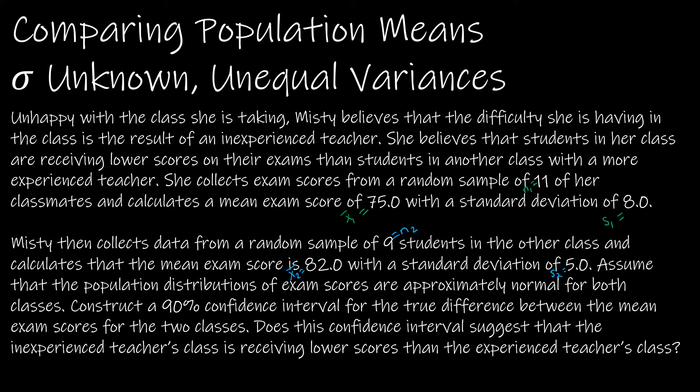She then collects a random sample of nine students from another class. So that's n2. And calculates that the mean exam score is 82, so X bar two is 82 with a standard deviation of 5. We are going to assume that the population distributions of exam scores are approximately normal for both. We are going to construct a 90 percent confidence interval for the true difference between the mean exam scores for the two classes.